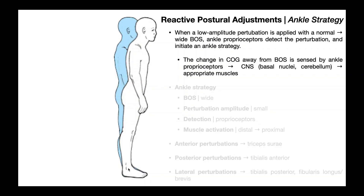Remember that around the ankle joint there are proprioceptors which allow the brain to detect the relative position of the ankle — whether it's neutral, dorsiflexed, or plantar flexed, and to what extent. That proprioceptive information regarding ankle joint position is relayed up through the central nervous system, through the spinal cord up to the brain, more specifically the basal nuclei and cerebellum.